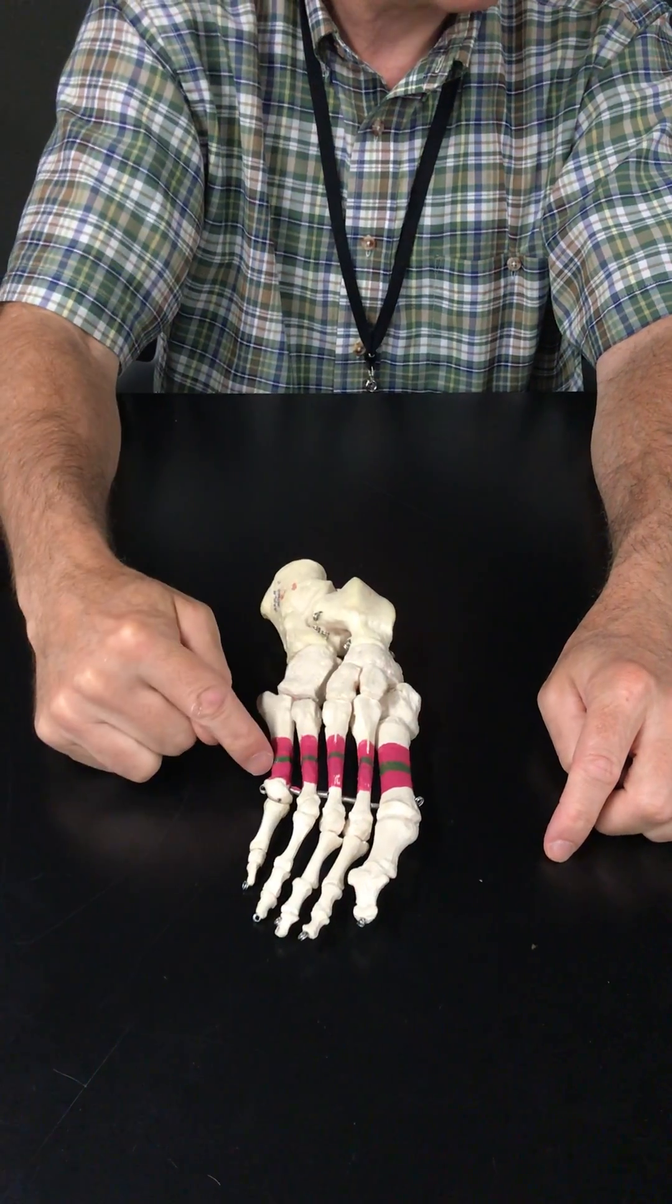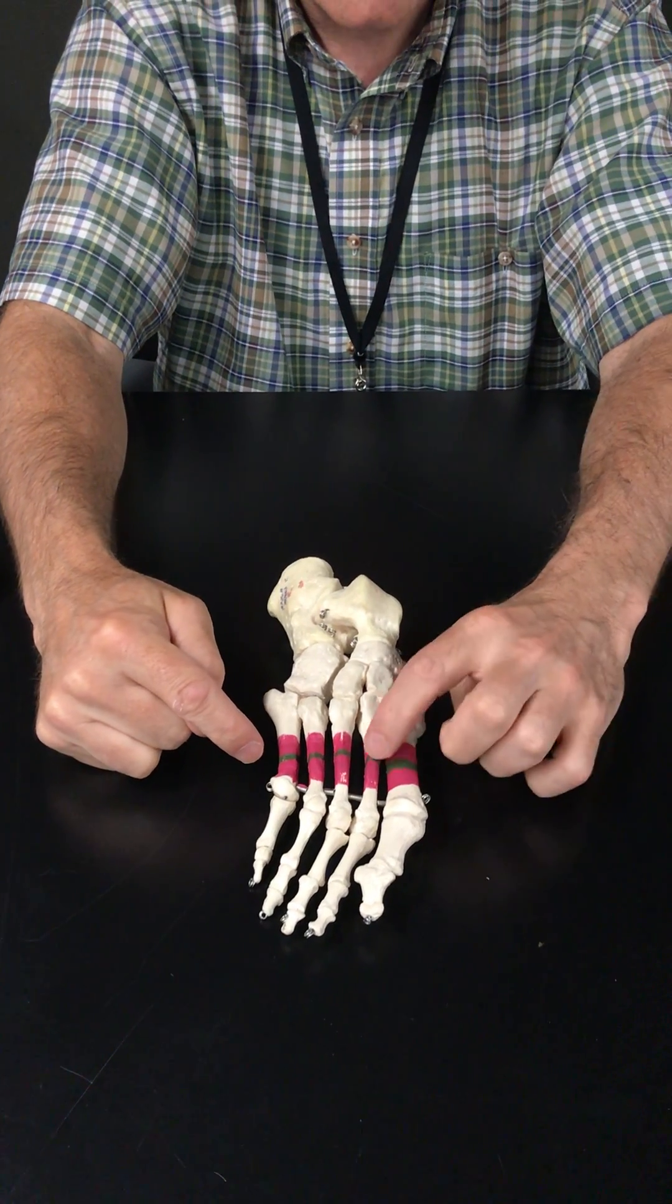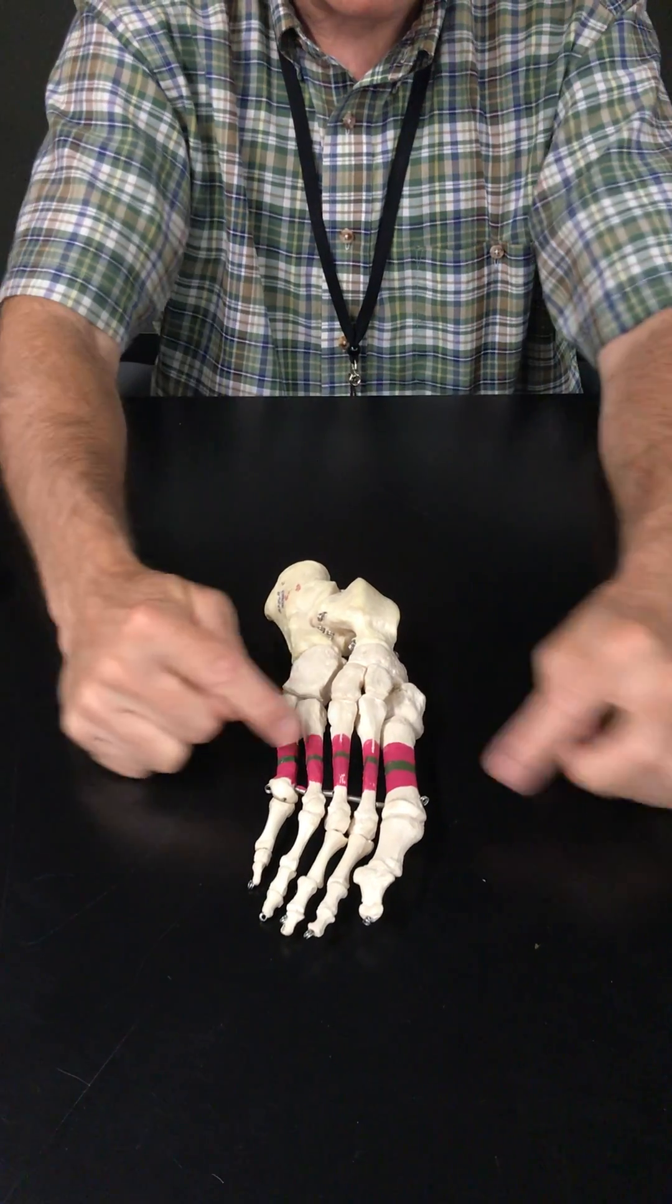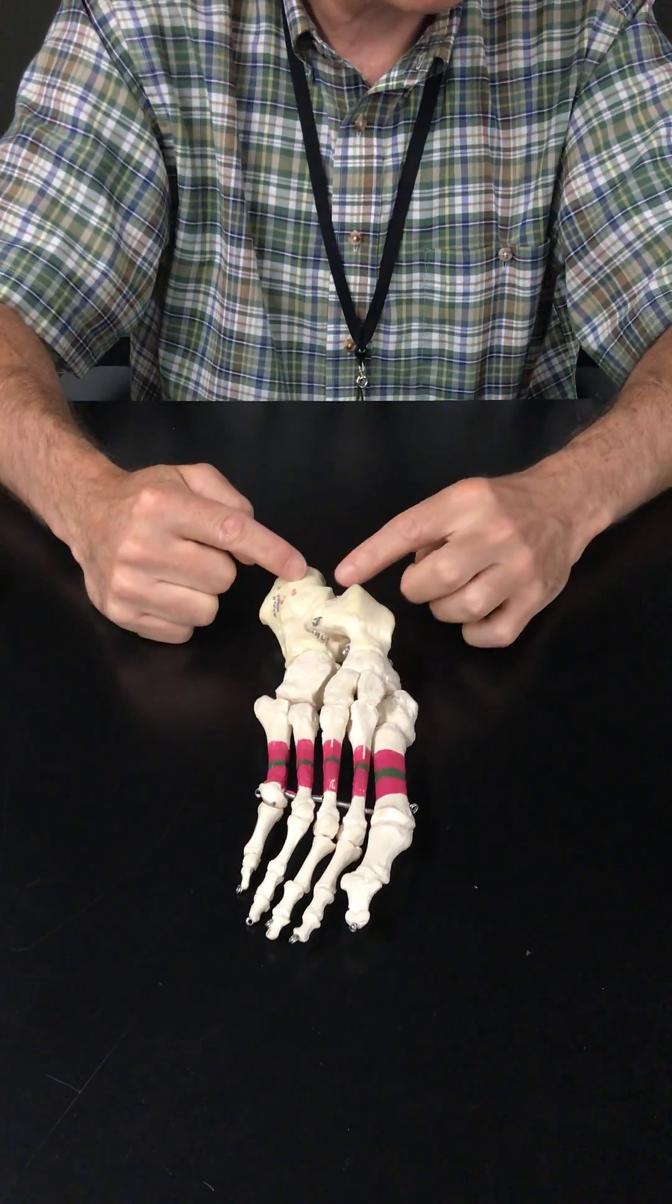Then you have your metatarsals: first, second, third, fourth, fifth. And they articulate with the tarsal bones.